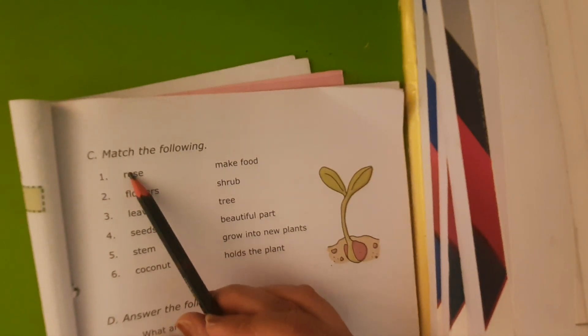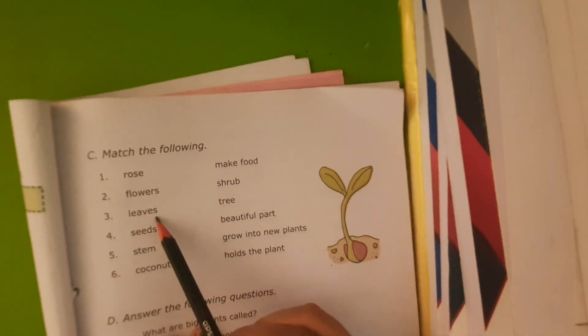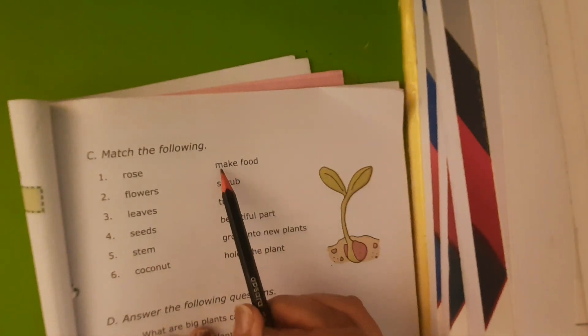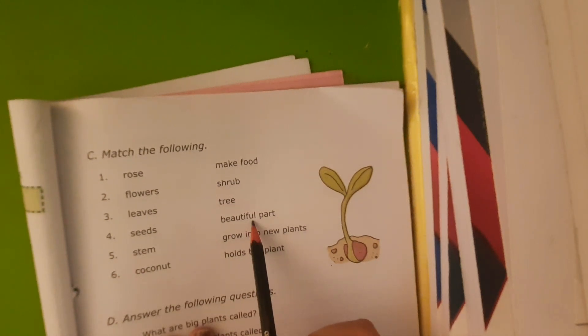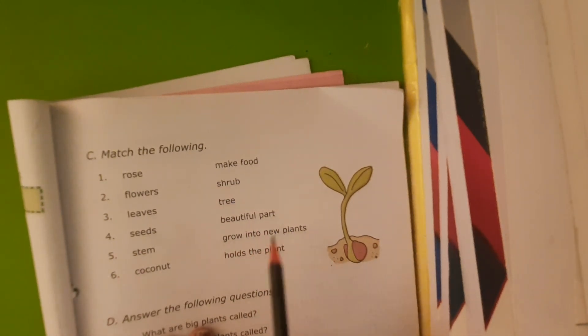You have to match these words with the second column words. First is rose, flowers, leaves, seeds, stem, coconut. Make food, shrub, tree, beautiful plant, grow into new plants, holds the plant.